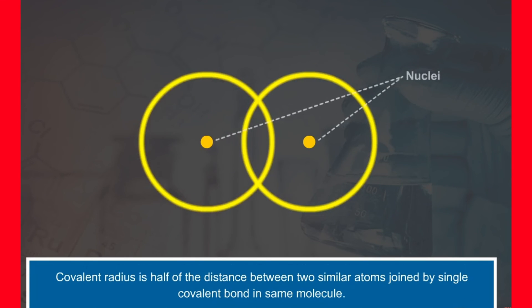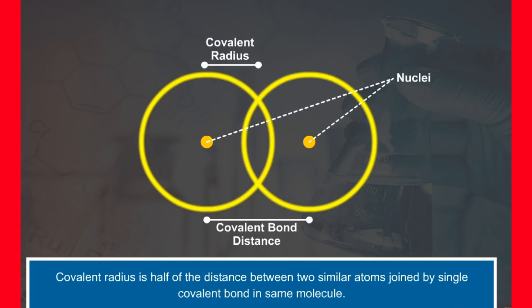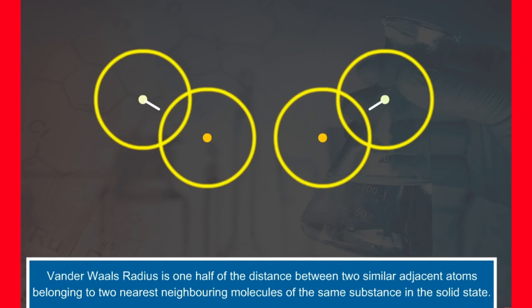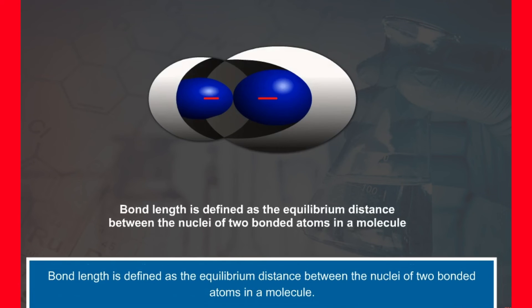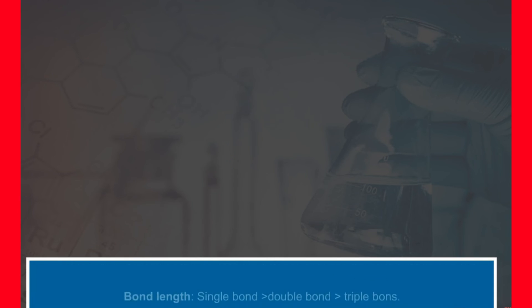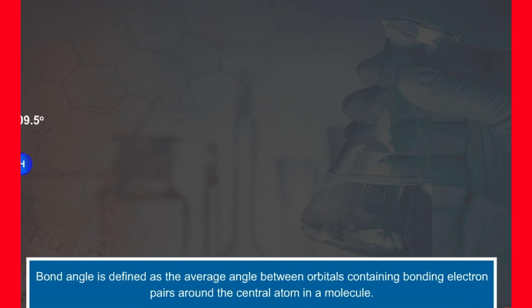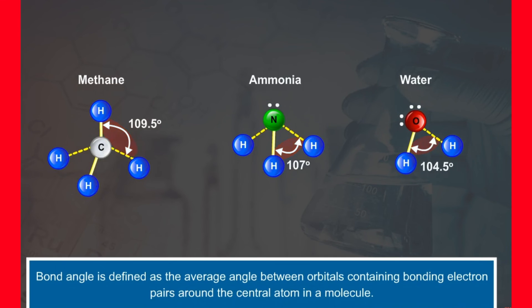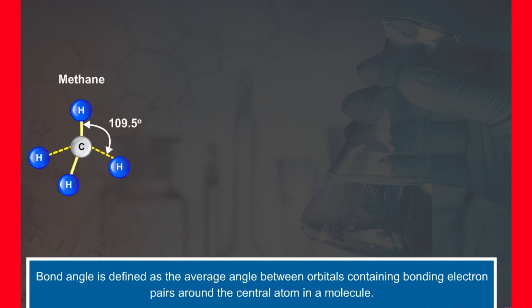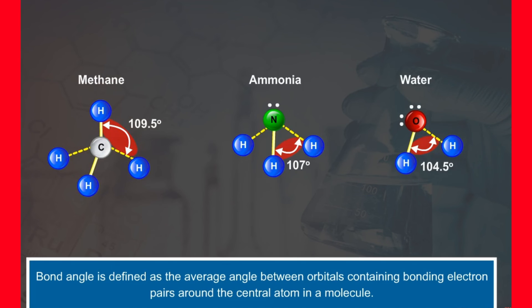Bonded atoms are pulled closely together and the atomic radius is called covalent radius. On the other hand, in the unbonded state, the attractive forces are much less and the atomic radius is called the van der Waals radius. It is always larger than covalent radii. Bond length is defined as the equilibrium distance between the nuclei of two bonded atoms in a molecule. Bond length is smallest in case of triple bond and it is longest in the single bond. Let us move to another parameter, bond angle. It is defined as the average angle between orbitals containing bonding electron pairs around the central atom in a molecule. It varies with the size of an atom.